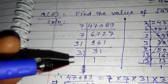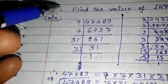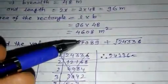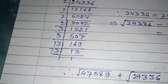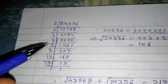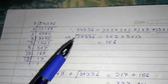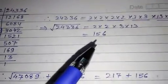By the prime factorization method. First understand, similarly we can find the square root of second number, and then adding the value of square root of these two numbers.